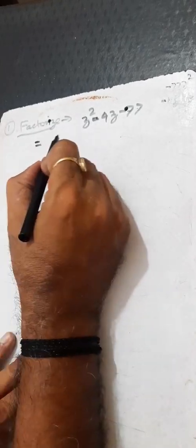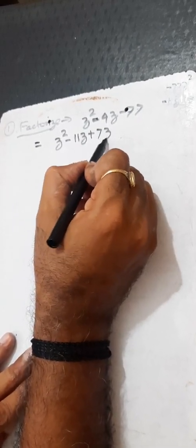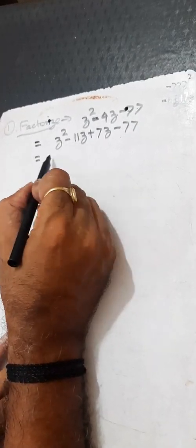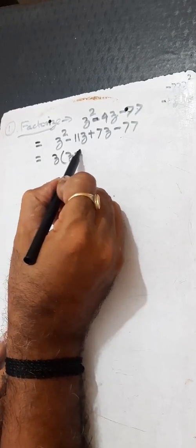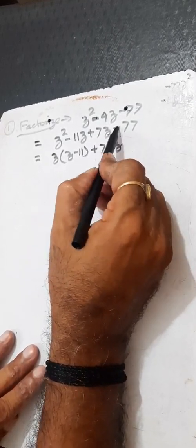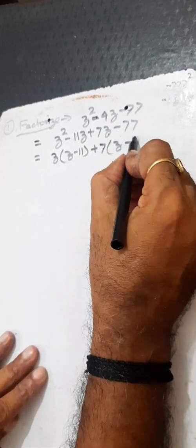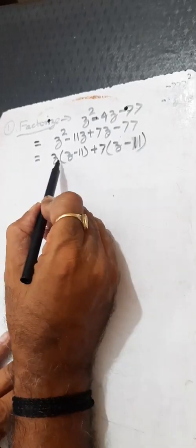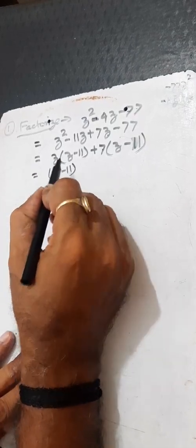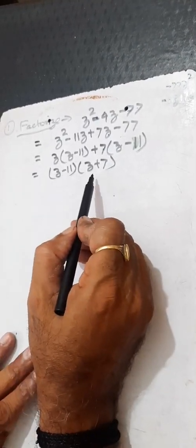We can write this as: z squared minus 11z plus 7z minus 77. Here is the main rule. We take z common from the first two terms: z(z minus 11), and 7 common from the last two terms: 7(z minus 11). So the factor is (z minus 11)(z plus 7).